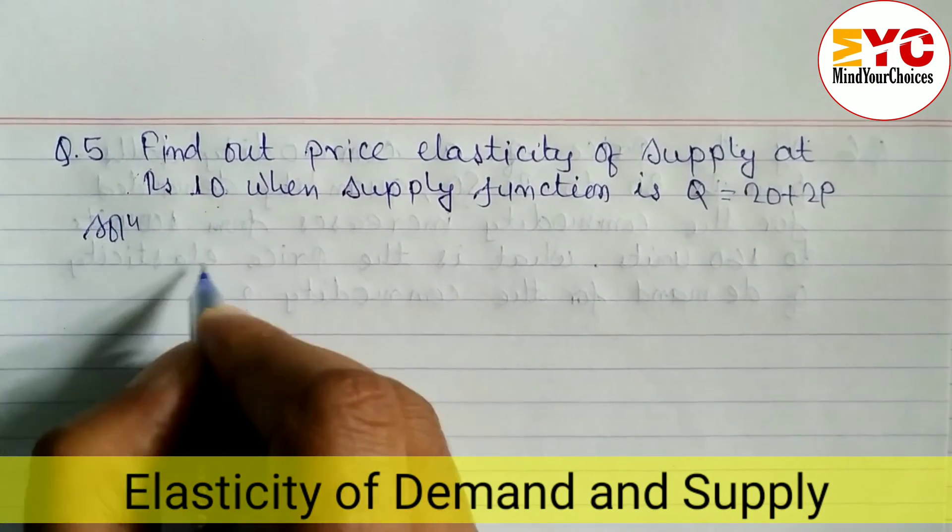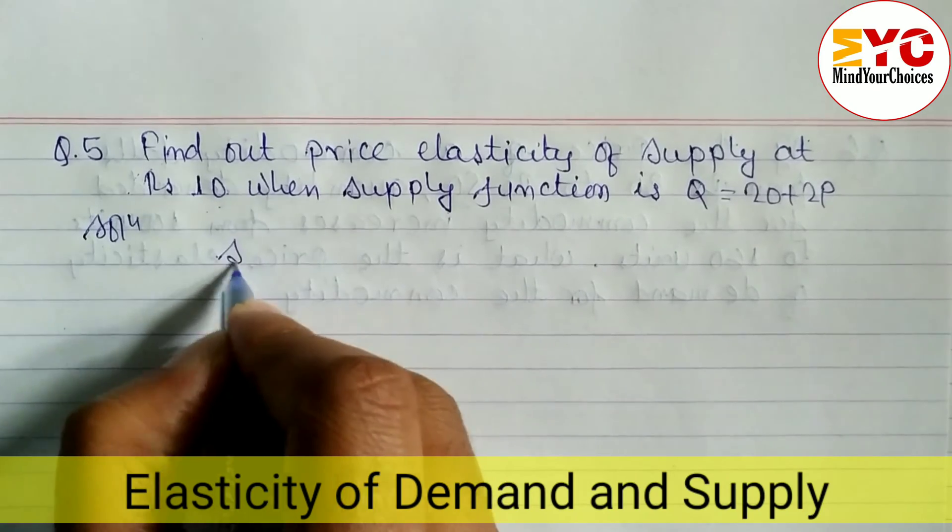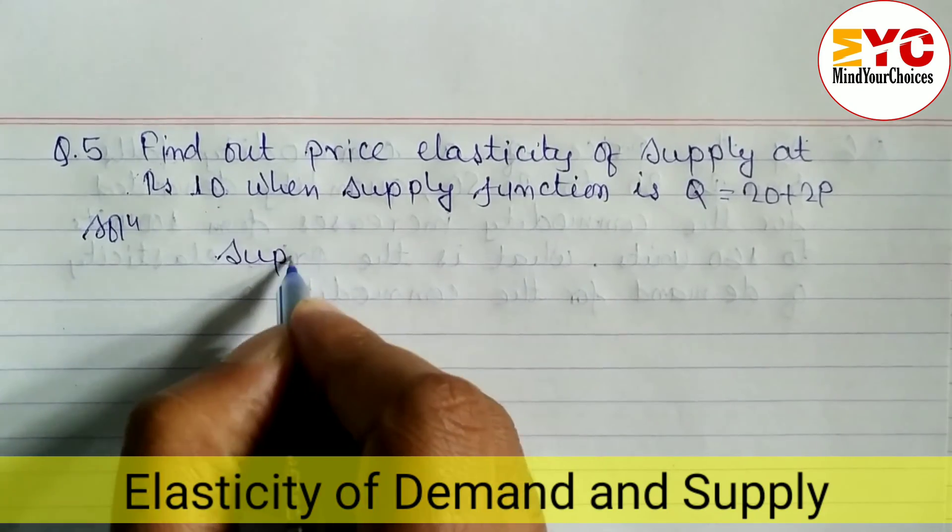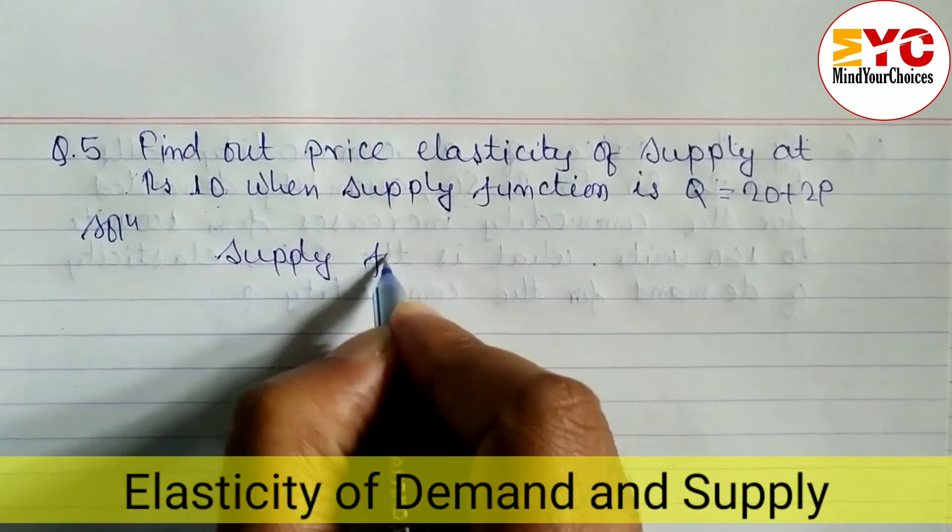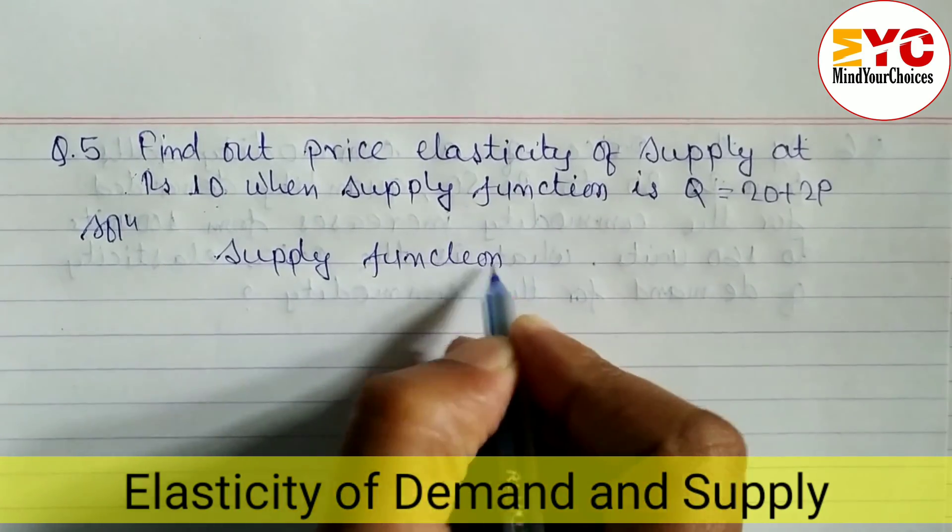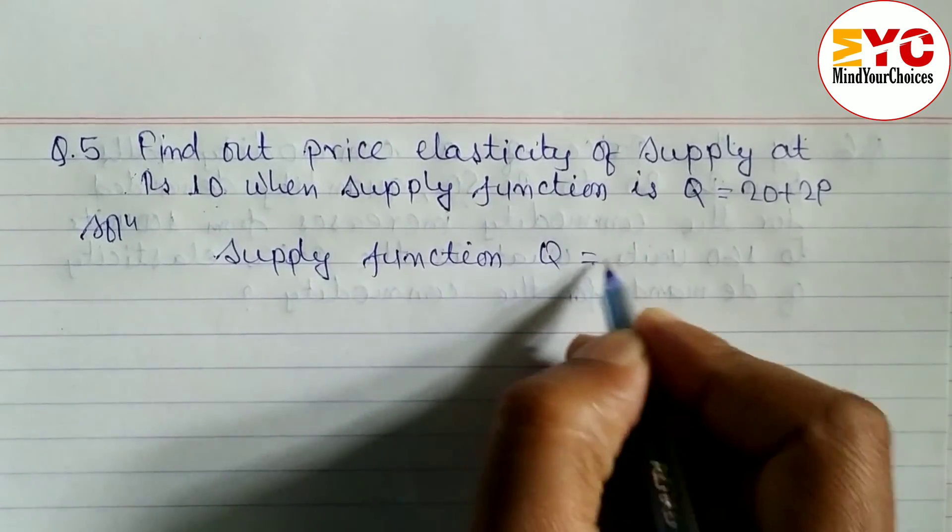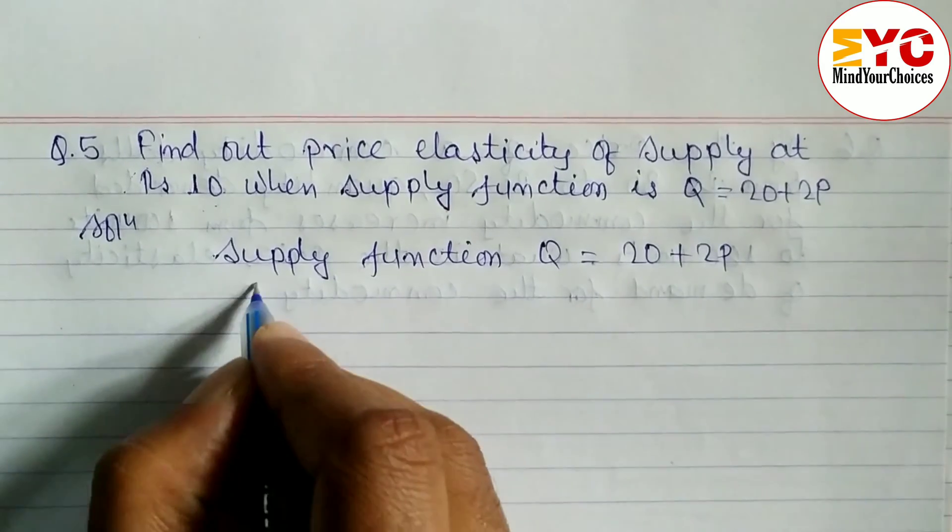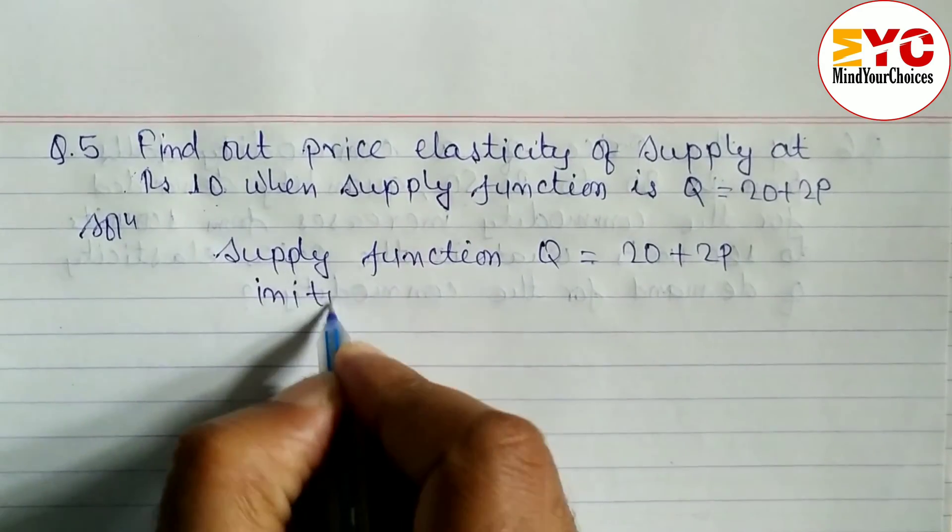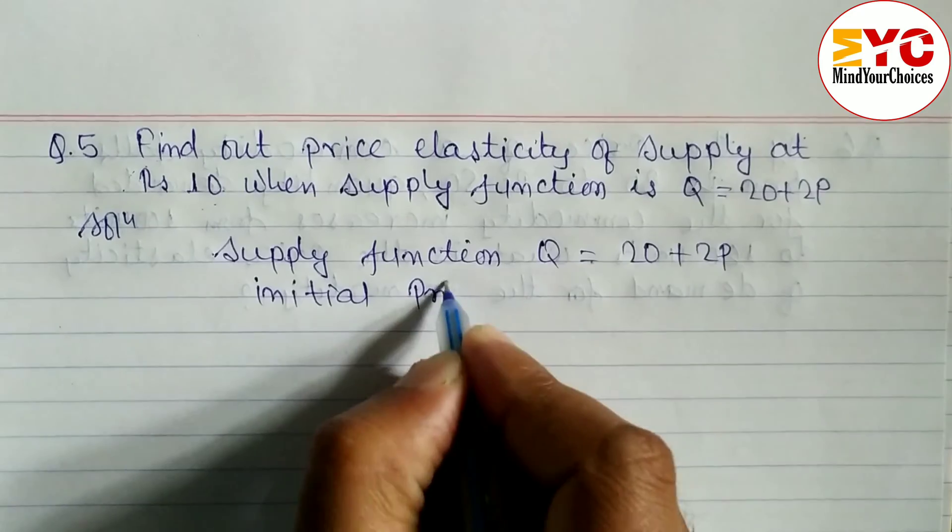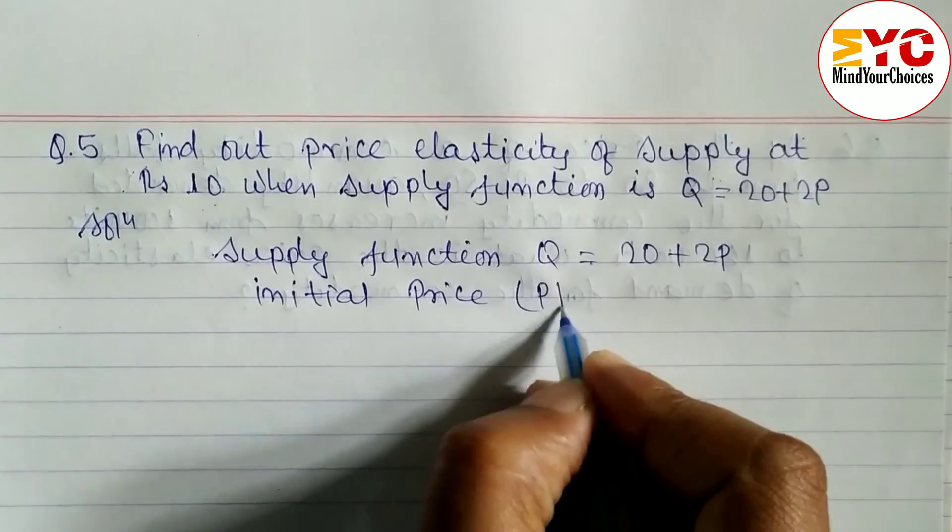Let's start the solution. First of all, we have to write down the given supply function. The supply function is Q = 20 + 2P, and the initial price given is P = Rs 10.